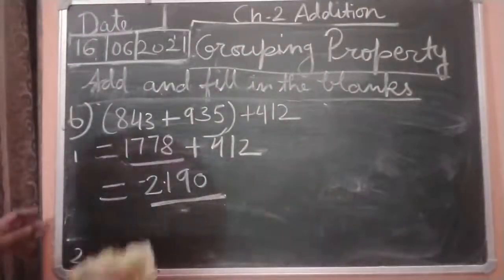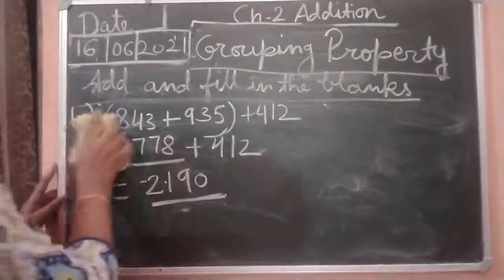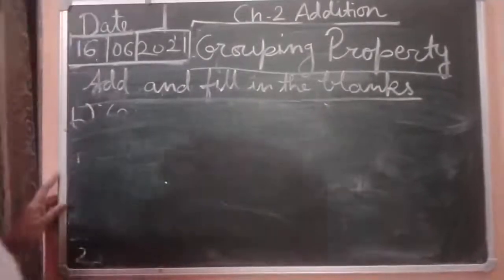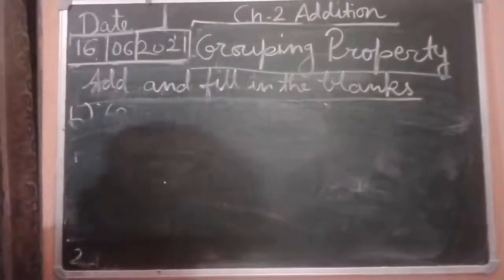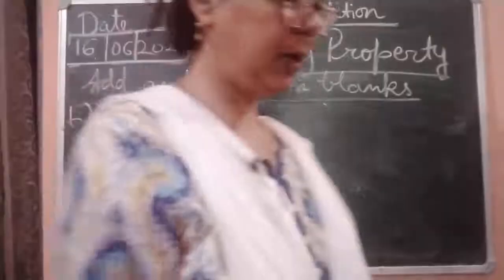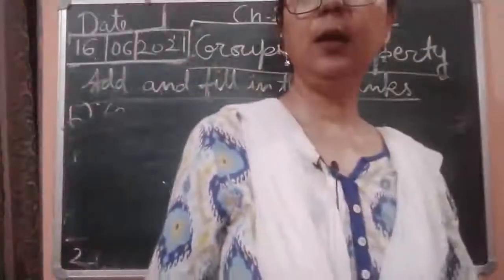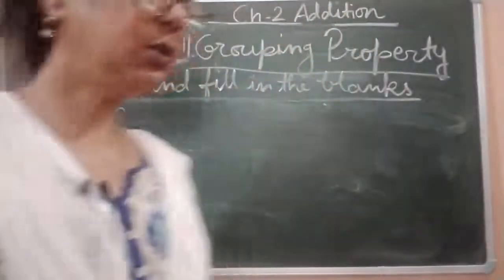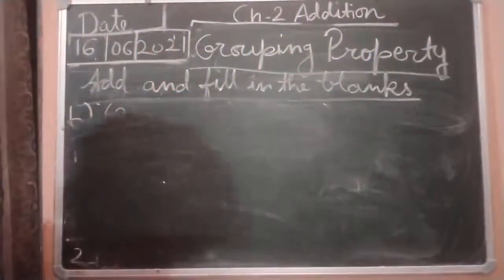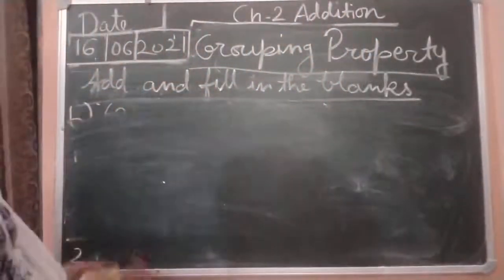A and B are completed. Now we are moving to the next one, which is the zero property — the addition property of zero.